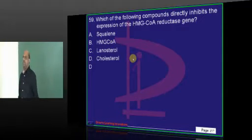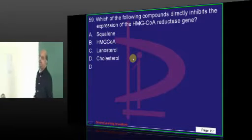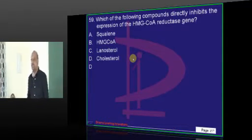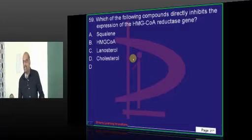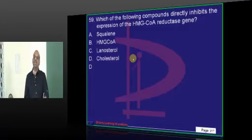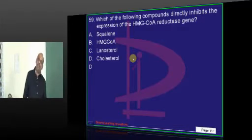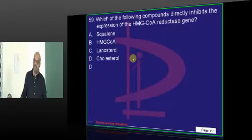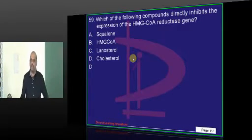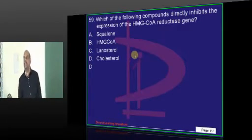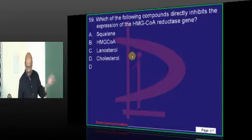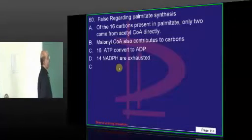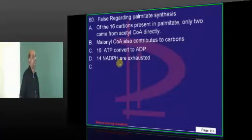Regarding HMG-CoA Reductase and what is required for cholesterol synthesis: when end-product cholesterol accumulates sufficiently, it causes allosteric feedback inhibition of HMG-CoA Reductase.